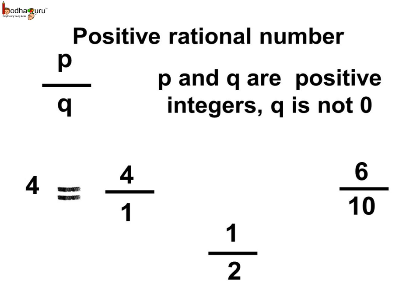Look here, both the numerator and denominator of these numbers are positive integers. Such rational numbers are called positive rational numbers, like 4, 6 by 10, 1 by 2, etc.